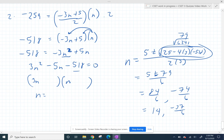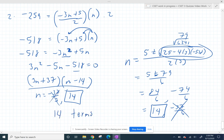And since you can't have a negative 37 over 6 term, then it must be the other one. 14 terms. So had you factored this, it would have been n plus 37 and n minus 14. If you had gotten there, good for you. And you still would have gotten these as your answer and you still would have come with the same conclusion that there are 14 terms.